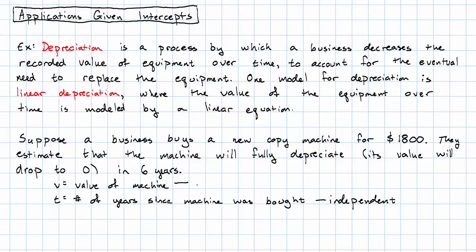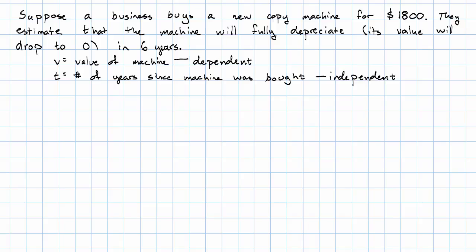And v then is the dependent variable. The information given to us in this story is telling us about the intercepts of our equation. It says when t equals 0, when they've just bought the copy machine and no time has passed,